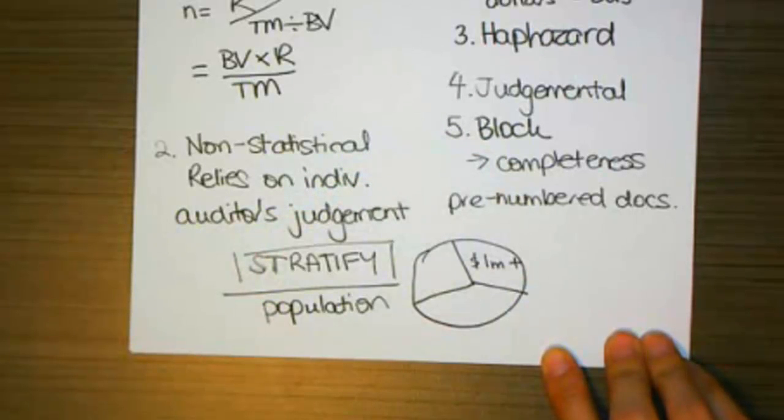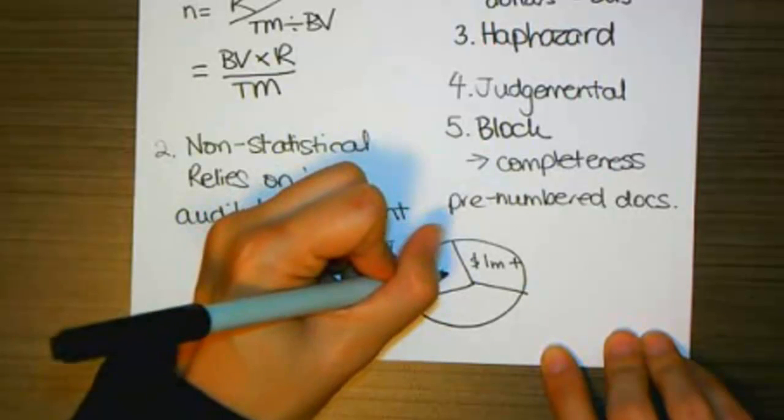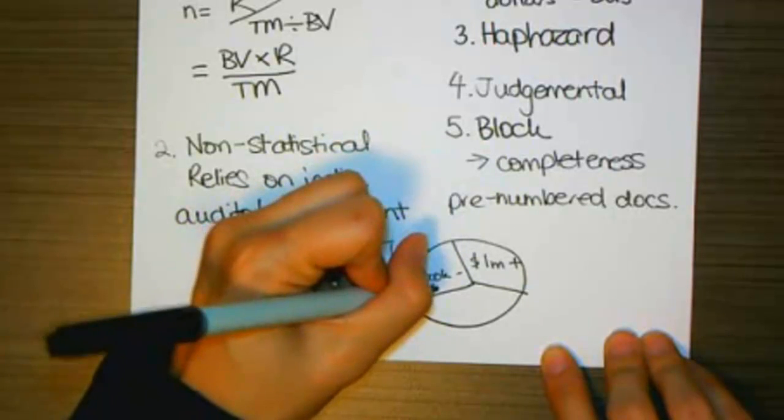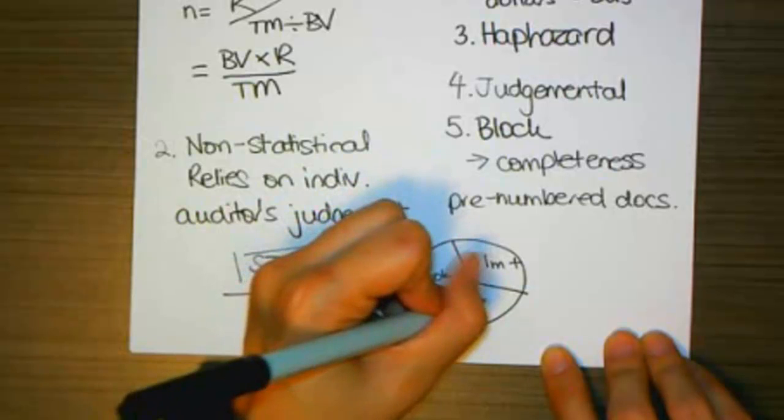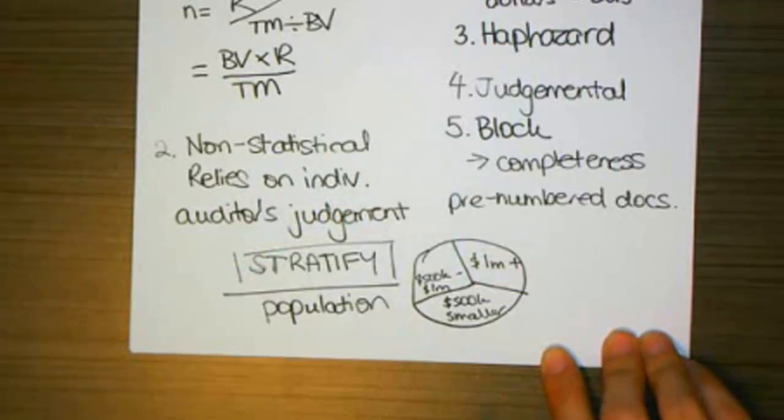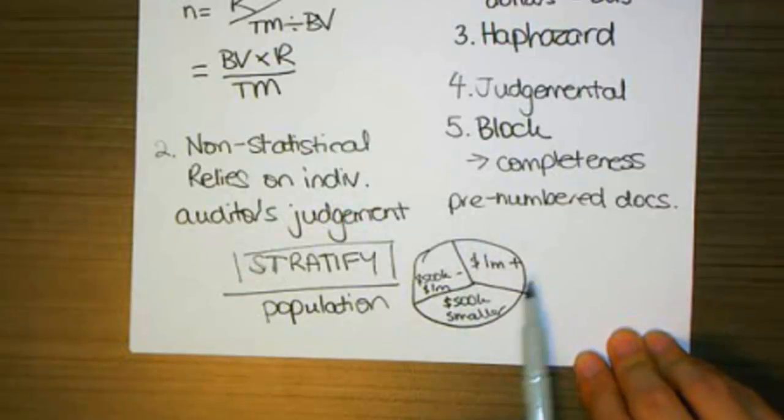I might have then accounts that are 500,000 to a million, and then 500,000 or smaller. And then within those strata, I can then sample within those as well.